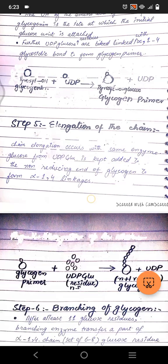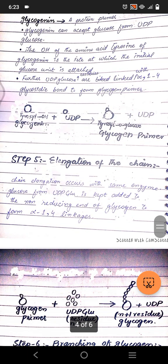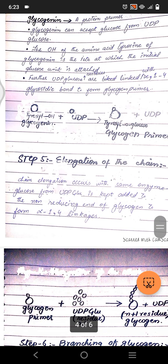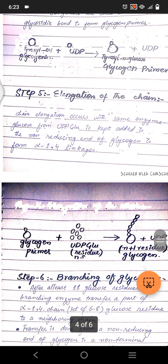Step five is elongation of the chain. Multiple UDP-glucose molecules keep adding to the glycogen primer — the tyrosine-linked glucose — continuously building the chain via alpha-1,4 linkages. This occurs in the presence of glycogen synthase enzyme.